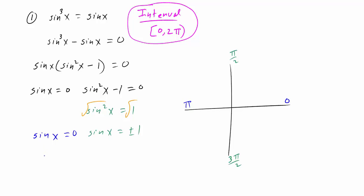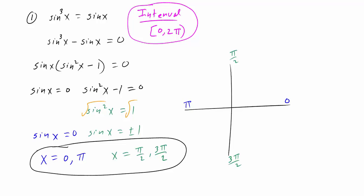We would simply have x equal to zero or pi. And for sine of x equals plus or minus one, x would equal either pi over two or three pi over two. So we have four solutions for this equation, because we're only looking within the interval of zero to two pi — these four answers cover all the possibilities.